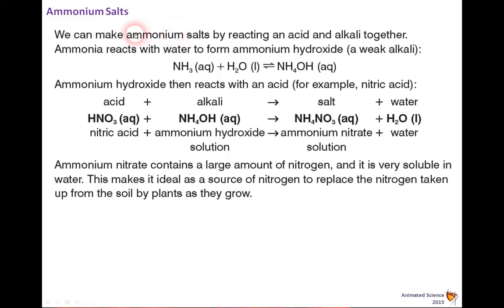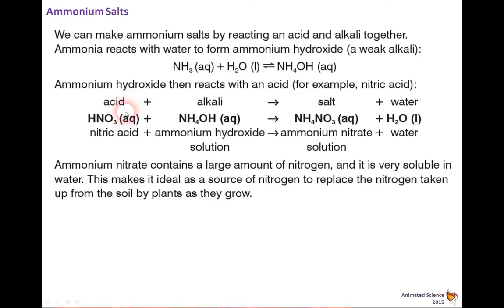Ammonium salts — note the spelling: double M, ammonium. By reacting an acid and alkali together, ammonia reacts with water to form ammonium hydroxide, a weak alkali. Ammonia is very dangerous and should be treated carefully at high concentrations. Taking the ammonium hydroxide and reacting it with an acid — for example, nitric acid — the word equation is: acid + ammonium hydroxide → ammonium nitrate (in solution) + water.